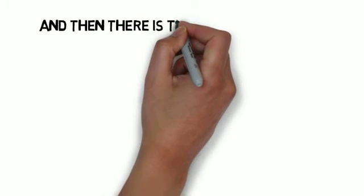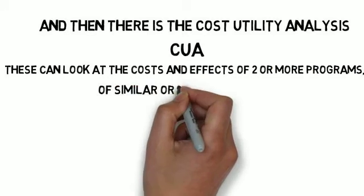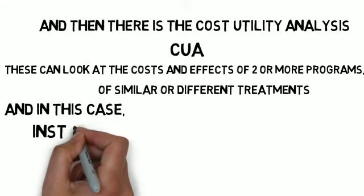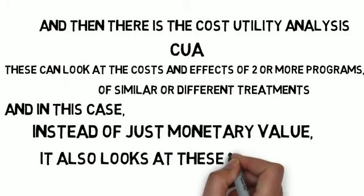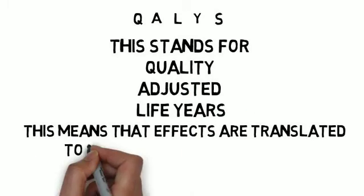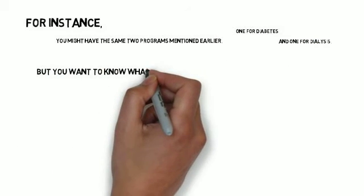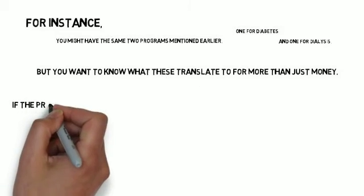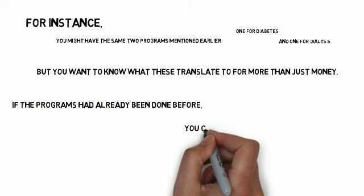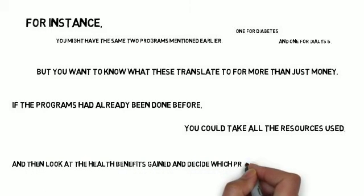And then there's the cost-utility analysis, or CUA. These can look at the cost and effects of two or more programs of similar or different treatments. And in this case, instead of just monetary value, it also looks at these things called QALYs — Q-A-L-Y-S — which stands for Quality Adjusted Life Years. This means that effects are translated to more realistic long-term effects. For instance, you might have the same two programs — one for diabetes and one for dialysis — but you want to know what these translate to for more than just money. If the program has already been done before, you could take all the resources used and then look at the health benefits gained and decide which program delivers the most QALYs.